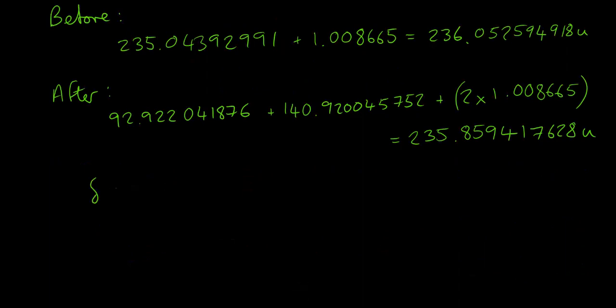So, from these two values, we can find the mass defect, which is the difference between these two numbers. And that comes out to be 0.19317729U.